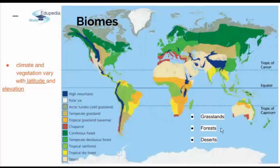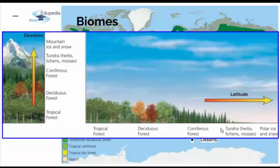An important thing to mention is that climate varies with latitude and elevation. This graph shows this nicely and clearly. You can see different biological communities dependent on the latitude and elevation of the area. If you go up in elevation, temperatures are lower, so you transition from tropical forests to deciduous forests and so on. Similarly, moving from the ocean toward inland areas, tropical forests are replaced by deciduous forests.